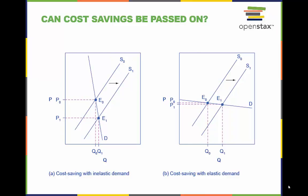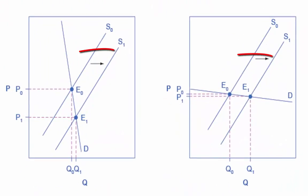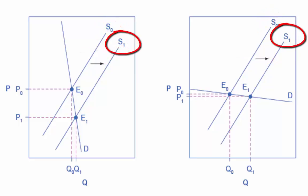Elasticity analysis can give us insight into the impact of forces like cost-saving gains, or in other words, the introduction of new equipment or new production practices that decrease the cost of production for suppliers. Cost-saving gains cause supply to shift to the right, from S0 to S1. That is, at any given price, firms will be willing to supply a greater quantity.